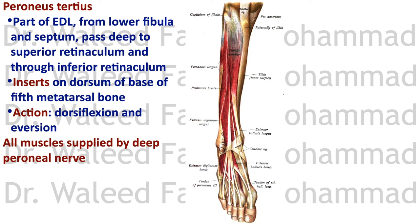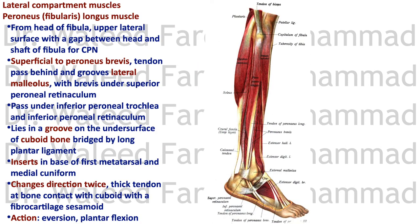Peroneus tertius is part of the extensor digitorum longus. Its thin tendon goes to the dorsum of the base of the fifth metatarsal bone. The action is dorsiflexion and eversion, because it attaches to the lateral margin of the foot. All anterior compartment muscles are supplied by the deep peroneal nerve.